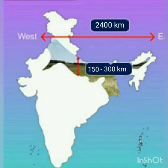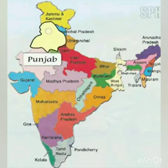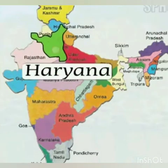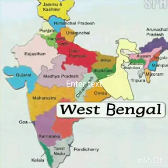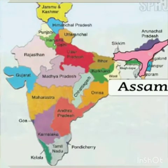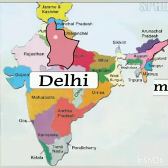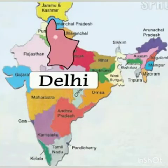The northern plains cover the states of Punjab, Haryana, Uttar Pradesh, Bihar, West Bengal and Assam. The union territories of Delhi and Chandigarh also lie in these plains.